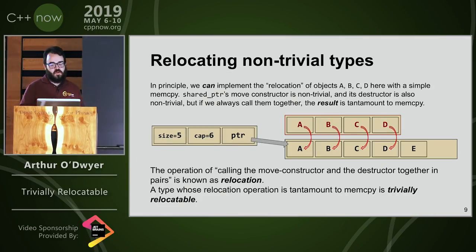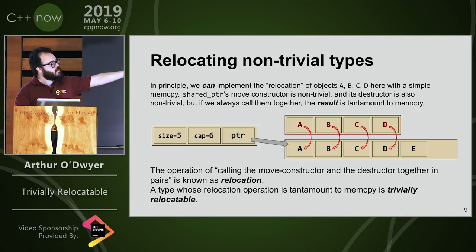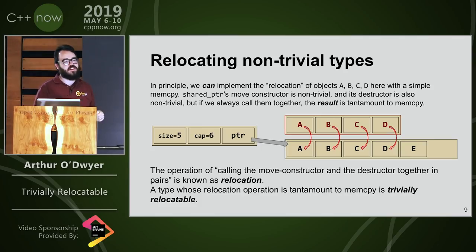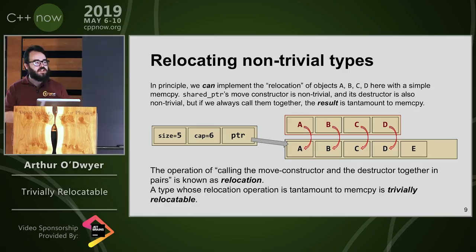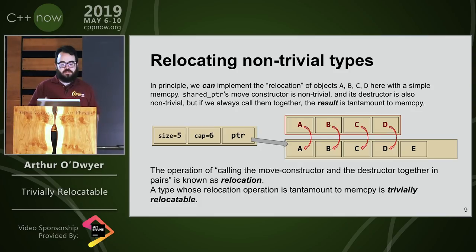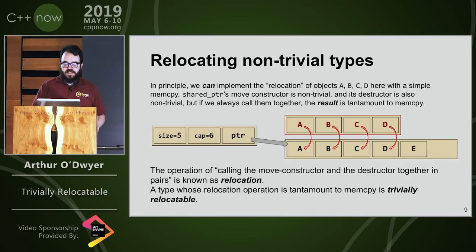However, when I take those shared_ptrs from one place — ownership exists in that one place — and I move them to the other place, and I destroy the originals, I haven't really changed anything. I could have just used memcpy for that, taking the bit pattern from one place to the other, as long as I didn't call either the move constructor or the destructor. I just need to get the bits over there, and as soon as I start interpreting them as shared_ptrs, it's going to work fine. So the operation of calling move constructor plus destructor — I call that relocation. Not just for int*, but even for shared_ptr and unique_ptr and a whole bunch of types, their relocation operation taken as a whole is equivalent to memcpy. I call this a trivially relocatable type. Just like a trivially copyable type is one where you can copy it with memcpy, a trivially relocatable type is one where the relocation operation could be accomplished with memcpy.